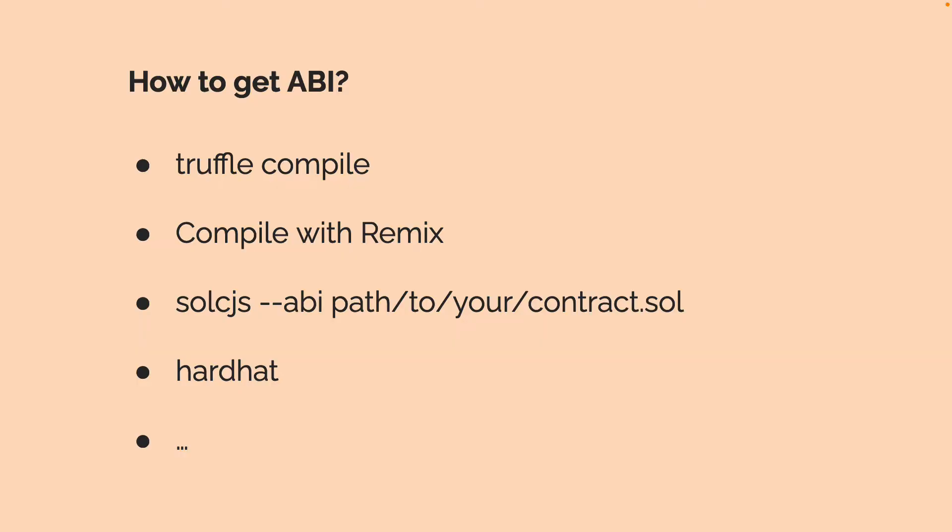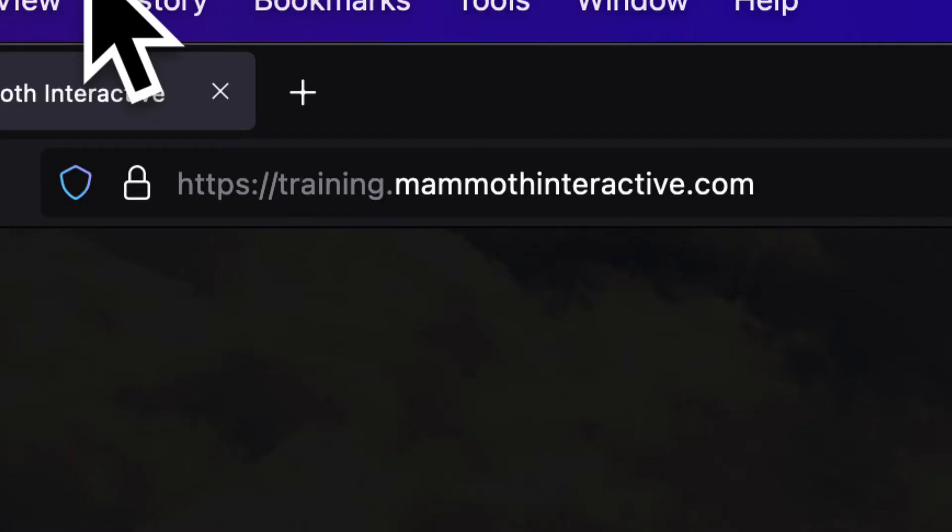To get an ABI, commonly you'll use Truffle Compile. If you're not using Truffle, you can also compile a contract with Remix or with Solidity Compiler, which is a command line tool. Or you can use another tool like Hardhat and more.